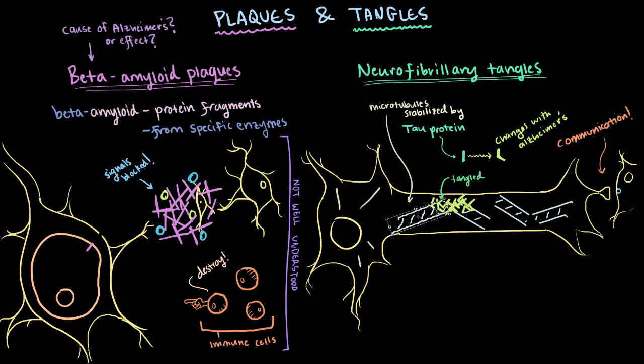And since our tracks are all messed up, this disrupts our whole transport system. And when this happens, we call them neurofibrillary tangles. Since the tangles are sort of like these thread-like fibers, or fibrils, we say fibrillary, and since they're in the brain, we say that they're neurofibrillary.